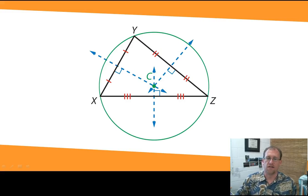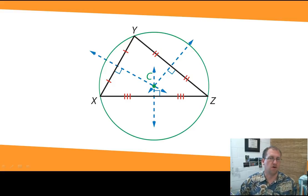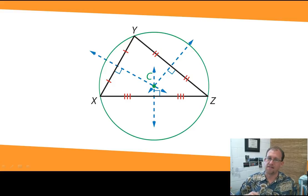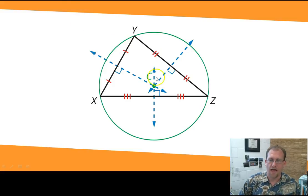Let me show you a picture. This circle is circumscribed around that triangle. You can see that the circle touches all three vertices of the triangle, and the center of the circle is at what's called the circumcenter. So the circumcenter of the triangle is the center of a circumscribed circle — that's why it's called the circumcenter. We found that center by finding the perpendicular bisector of all three sides of the triangle and looking at where they are concurrent, where they converge.